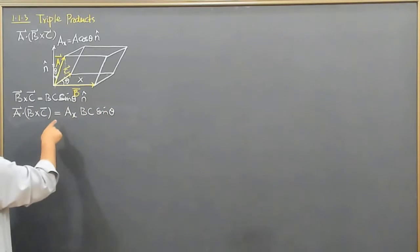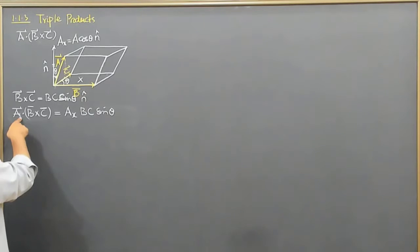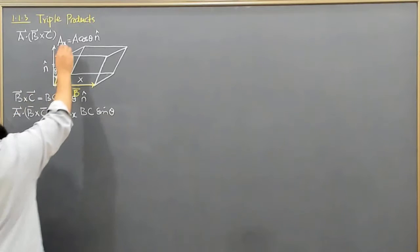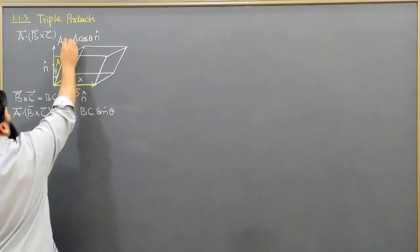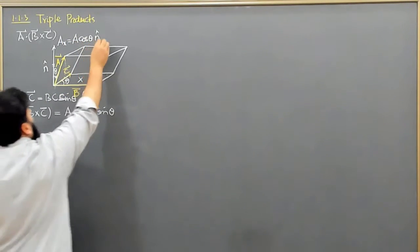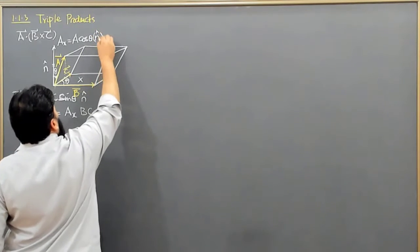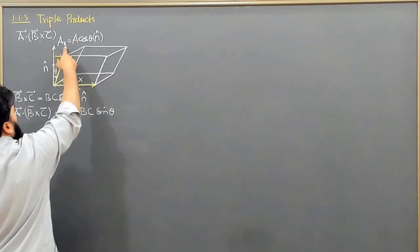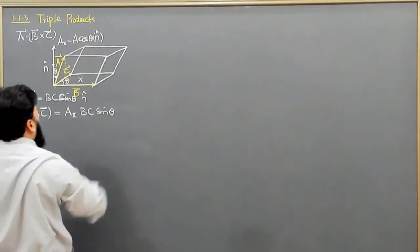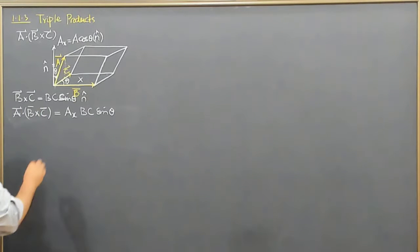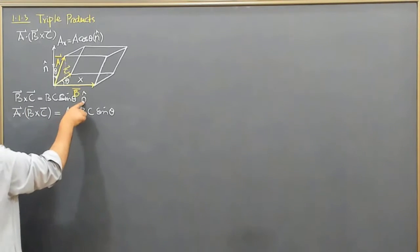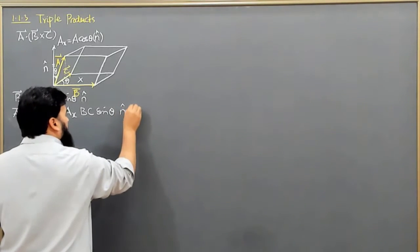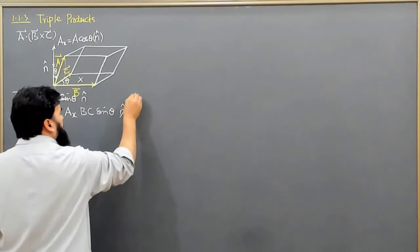AX here is in the N̂ unit vector direction. Keep this in mind that this is just a number, not a vector quantity — it is A·cosθ, but it is in the N̂ unit vector direction. This is also in the N̂ unit vector direction, and when N̂·N̂ comes in, N̂·N̂ equals 1.